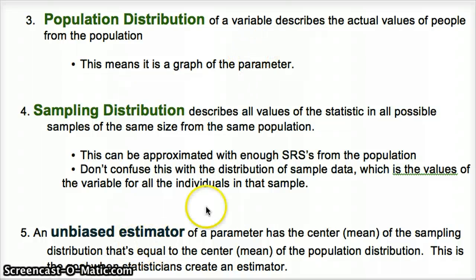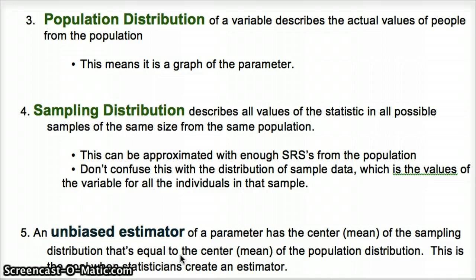An unbiased estimator has the center of the sampling distribution equal to the center of the population distribution. That means if we do everything correctly with sampling, we should get a mean that's the true mean. Our goal is to figure out the true value of something — the true average weight of males in California, the true number of people that will vote for somebody, or the true average income. With random sampling or random assignment, a large enough sample, and the right methods, we can have an unbiased estimator that gives us a true interpretation of the parameter.